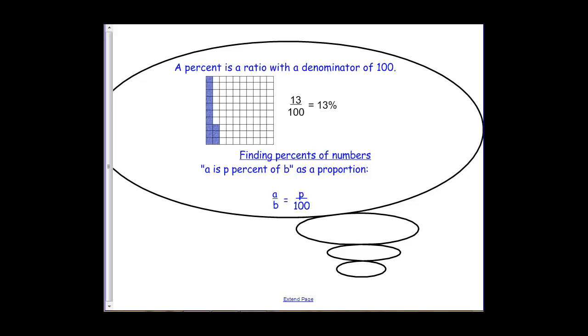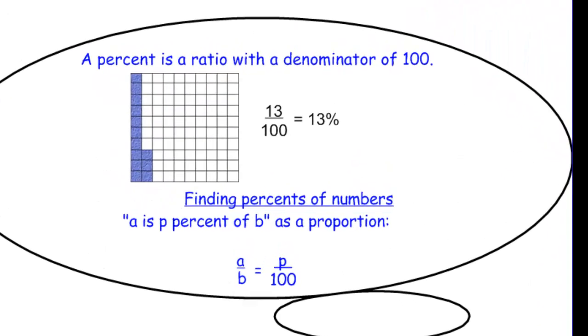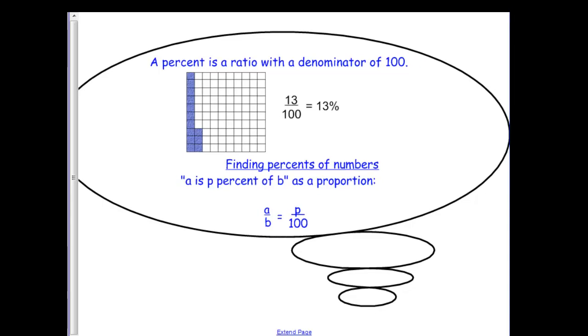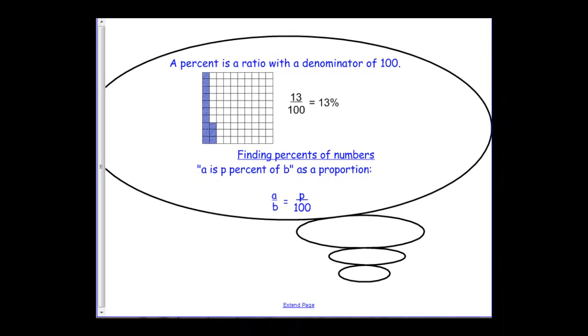Real quickly I want to review a couple things we talked about last week. We know that a percent is a ratio with a denominator of 100. Percent literally means per every 100. If we had 13%, that's 13 per every 100. And then more importantly from last week, that percent proportion. A is P percent of B as a proportion. The 100 is always on the bottom, the percent is over that 100, and then you have to figure out which of those two numbers is the A and which one is the B, and you can set up a percent proportion to solve.